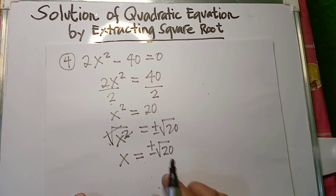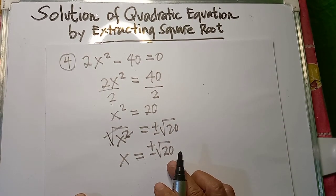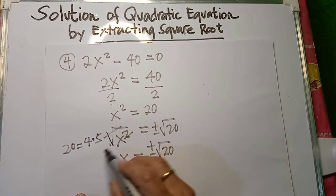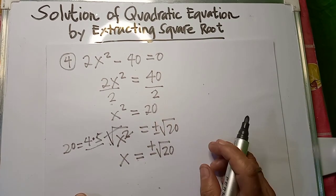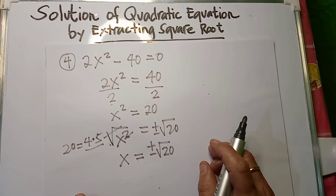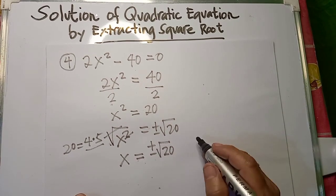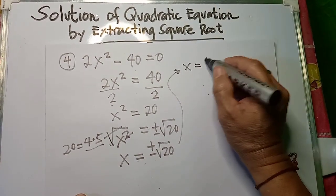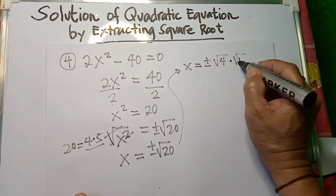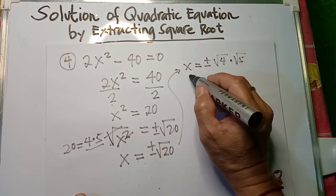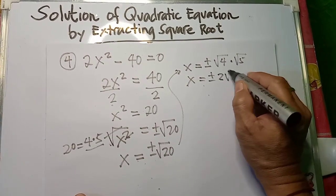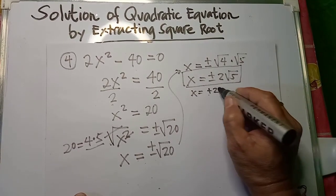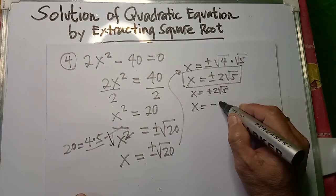What we do here is find another factor of 20 which is a perfect square. We can say 4 times 5 because 4 is a perfect square — and we want the greatest perfect square factor. So 4 times 5 also equals 20. We can rewrite it as plus or minus square root of 4 times square root of 5. Since the square root of 4 is 2, this becomes x equals plus or minus 2 square root of 5. So we have two values of x: x equals positive 2√5 and x equals negative 2√5.